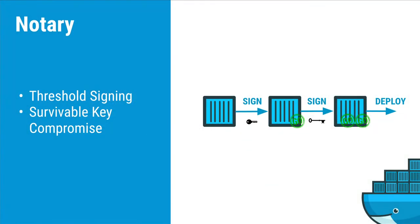One other thing we can do with Notary is have multiple signatures — what we advocate is threshold signing. The developer can sign the image, or Jenkins through a CI pipeline. Then you can have QA sign off on it as well, so as the image passes these thresholds it can obtain additional signatures, letting you verify each stage was met correctly — trust but verify. Another cool feature is survivable key compromise: we can rotate keys within Notary, so if a key is compromised you can revoke the old one, re-sign the image with a new key, and keep going.